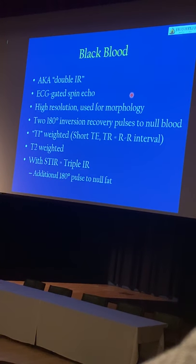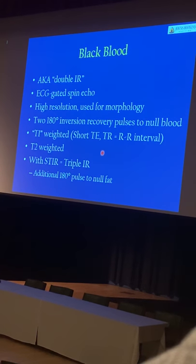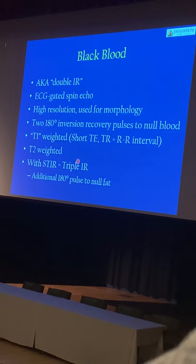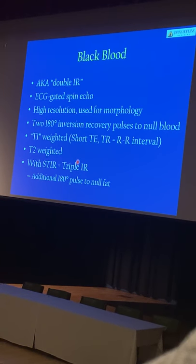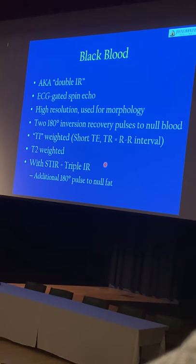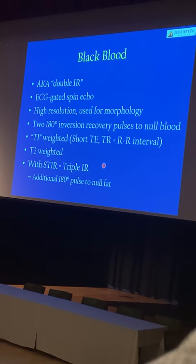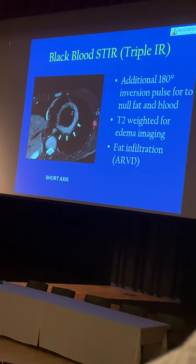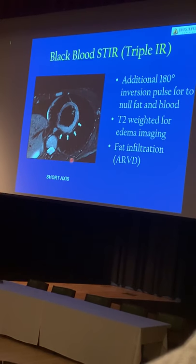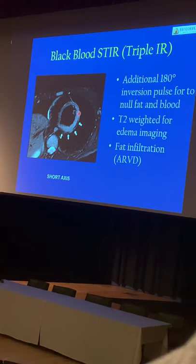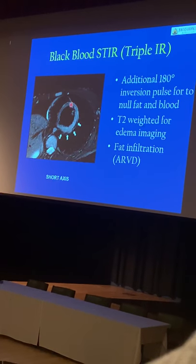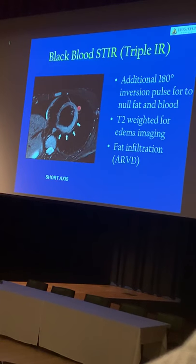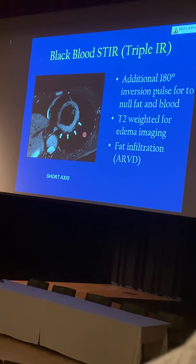These are ECG-gated spin echo sequences. They can be made either T1-weighted, in which you set the TR to every R-to-R interval, or more T2-weighted, in which the TR is equal to every two R-to-R intervals. You can also add an additional 180-degree pulse with fat suppression to make it a triple IR, which can be helpful to look at edema. In this triple IR example, we have also saturated the signal from fat, so any edema or water signal is very conspicuous. The myocardium on the septum side is a normal intermediate gray, but the lateral wall is much brighter because there is presence of edema in this patient with myocarditis.